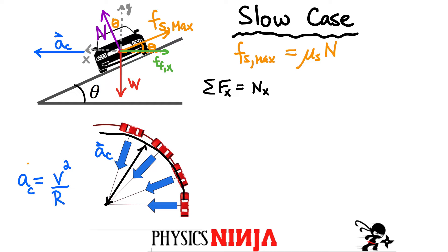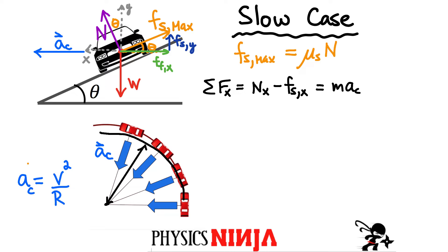There's a component of the force of friction along the x direction and also a component along the vertical direction, the force of static friction in the y direction. We're calculating the maximum values of these forces because I want to find the minimum speed I can safely go around this bend, which happens when I have the maximum force of static friction. So the sum of forces in x is: N_x minus the static friction in the x direction equals m times the centripetal acceleration. The normal in the x direction, with angle theta, is N multiplied by sine of theta.